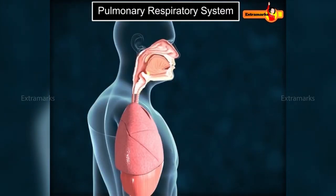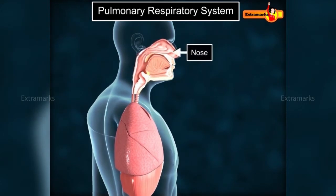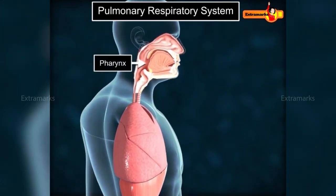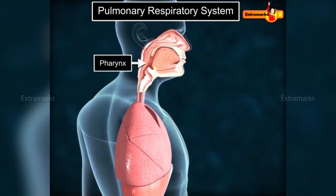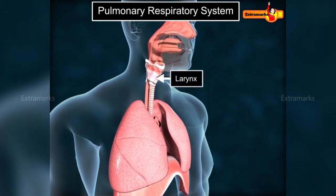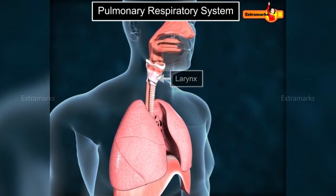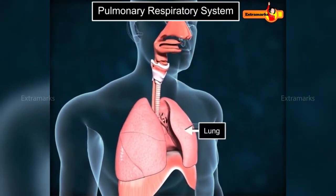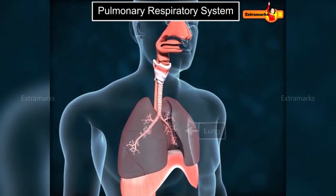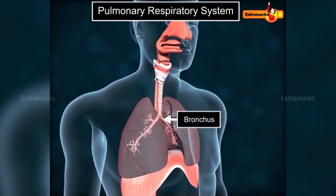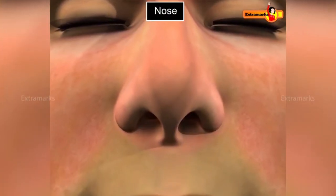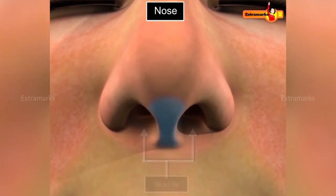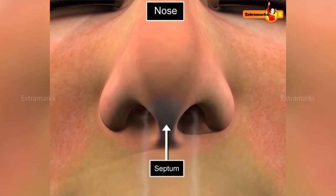The human respiratory system mainly consists of the nose, pharynx, larynx, trachea, the lungs, and bronchi. The external part of the nose bears two nostrils separated by a cartilaginous septum. Air enters into the nasal cavity through the nostrils.